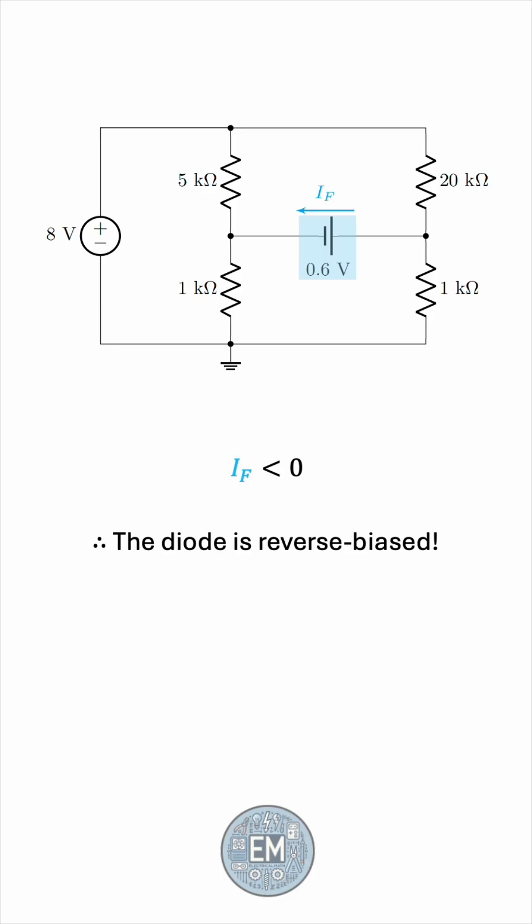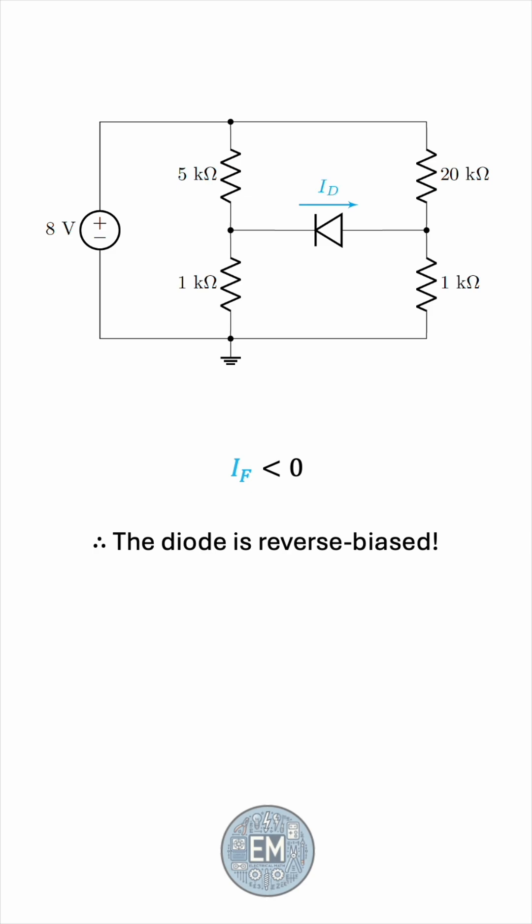Now that we know the diode was in fact reverse biased, we can go back to the original circuit and confidently state that ID must be 0. This was our original uneducated guess, if you will, but we had to do it properly. So the final answer is ID equals 0.